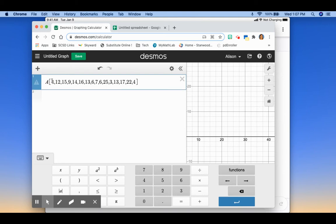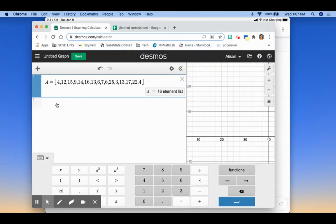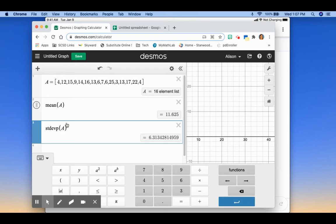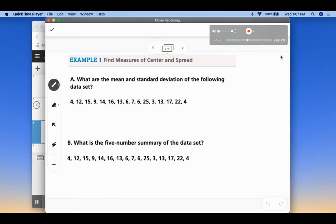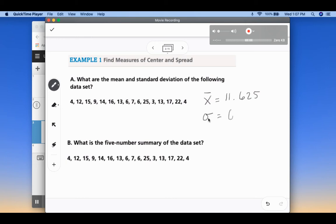I'm going to name this list A, just so that we have a value that we can use. So if we go back to our problem, it says, what are the mean and the standard deviation of the data set? So I can type mean of A, and it tells me that my mean is 11.625. And standard deviation is stdev of A is about 6.3. So our symbol for mean was 11.625. Standard deviation is the sigma, was about 6.3.